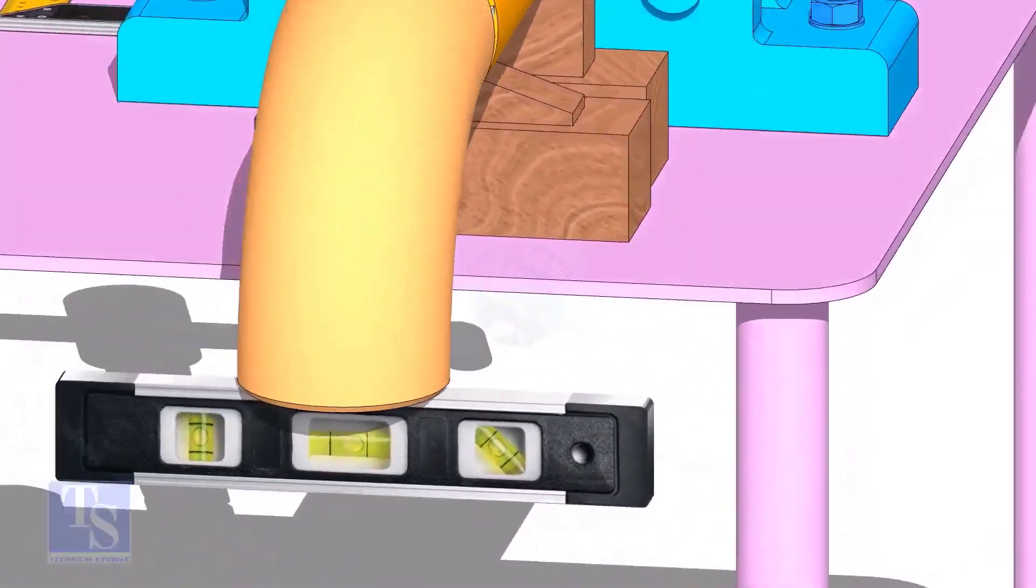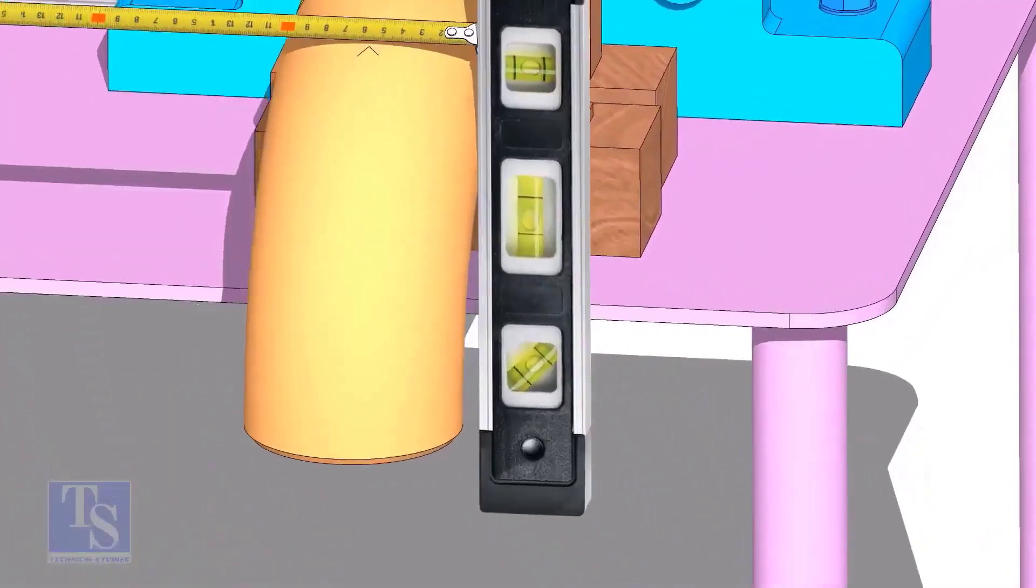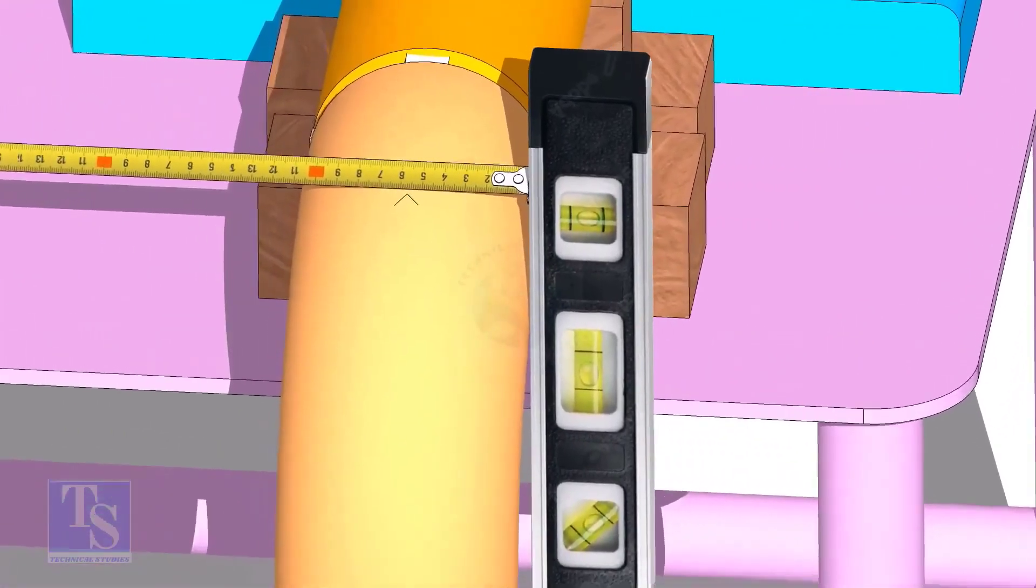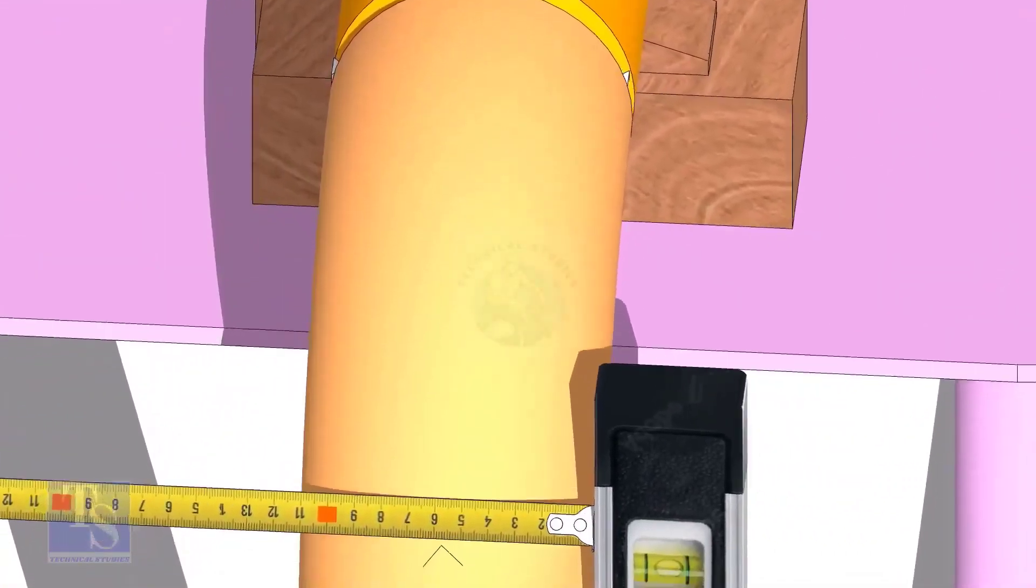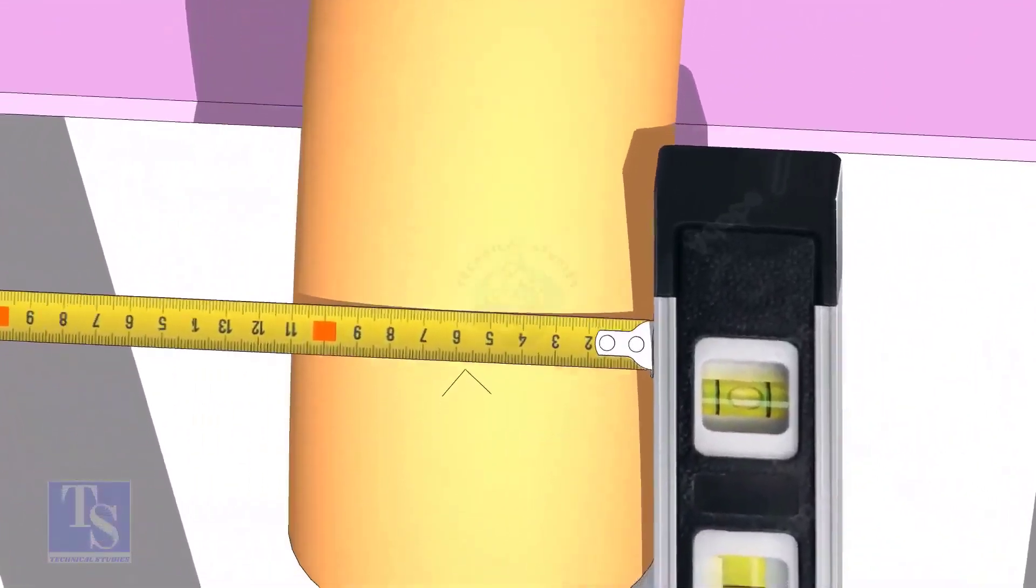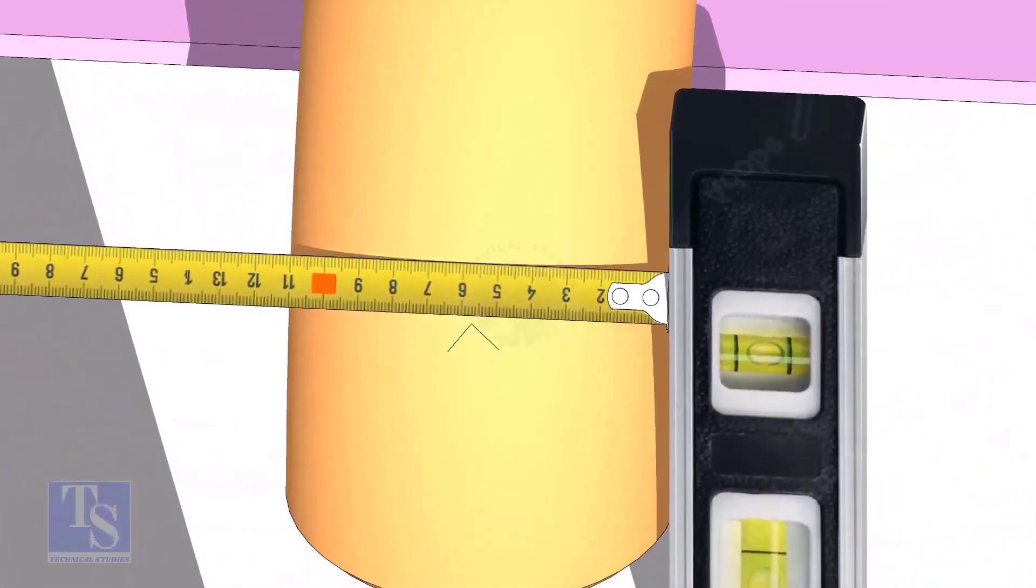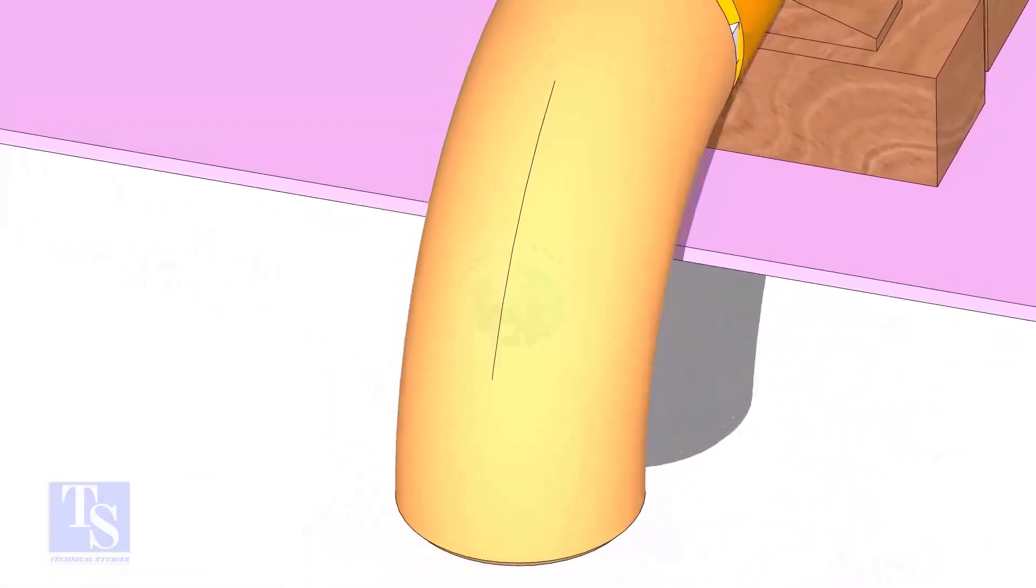Mark the center line of the elbow. OD of a 4 inch pipe is 114mm. Hold a level bottle at the side of the elbow vertically, and mark 57mm on the elbow at least three locations, as shown. Draw a line connecting these marks.